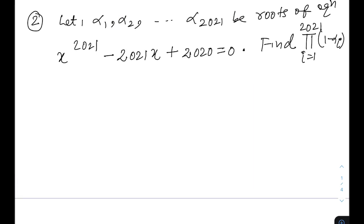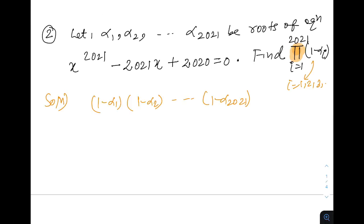Let alpha 1, alpha 2, up to alpha 2021 be roots of the equation x to the power 2021 minus 2021x plus 2020 equals 0. So it is a polynomial with 2021 degree. We have to find the product of 1 minus alpha i where i runs from 1 to 2021. Now the thought process is very obvious, like since this is a polynomial having root alpha 1 to alpha 2021.